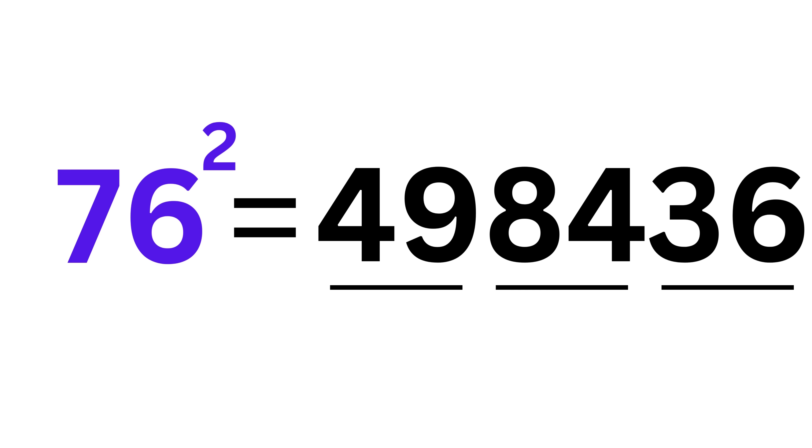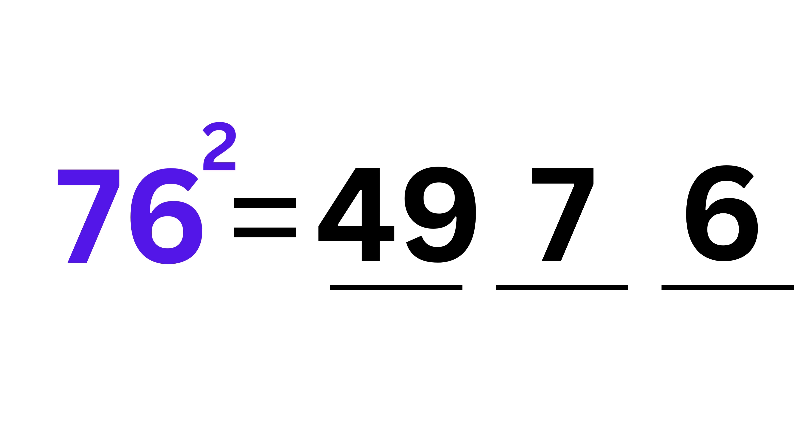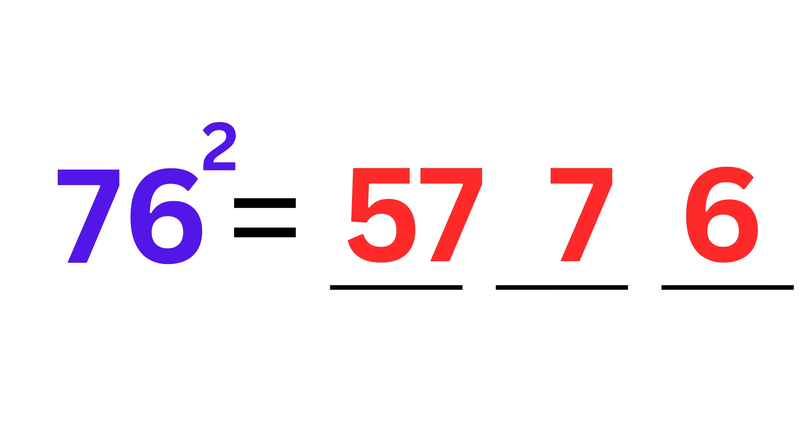This looks messy, but we clean it up from right to left. Take the 36. Keep the 6. Carry the 3 to the middle. Now the middle is 84 plus 3, which is 87. Keep the 7, carry the 8 to the left. Finally, add that 8 to the 49. That gives us 57. The result is 5,776.